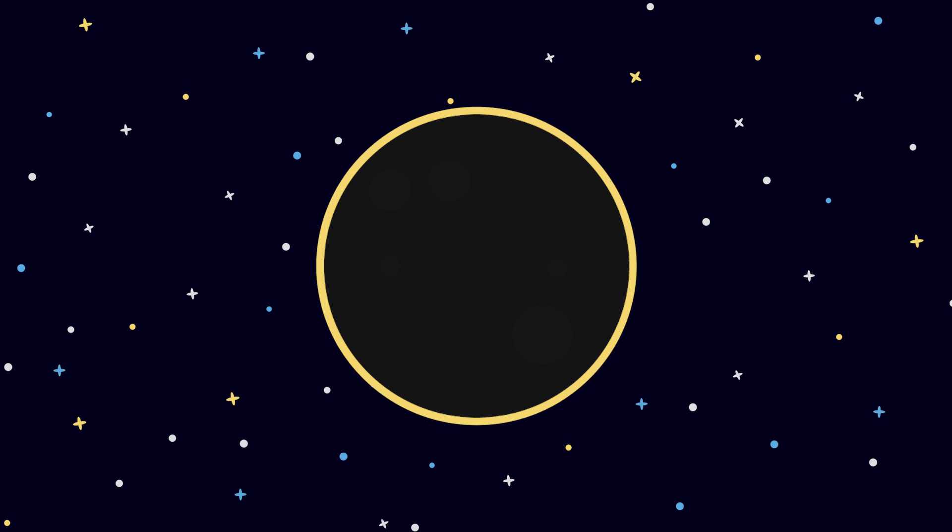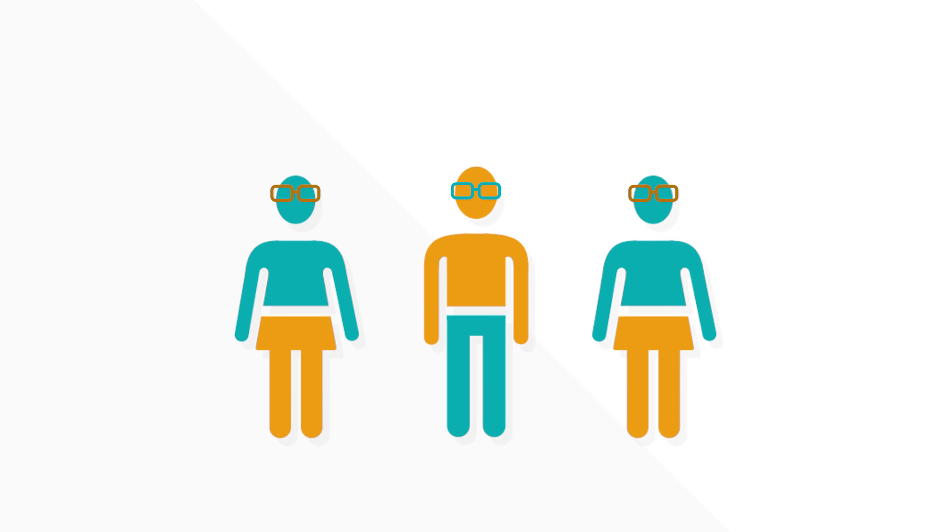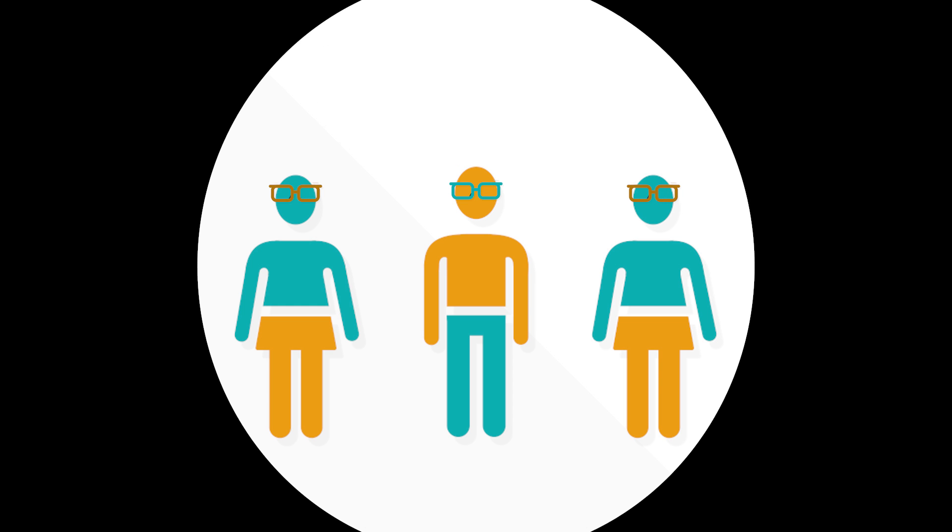The difference between a partial and total eclipse is dramatic, but require the same safety precautions. Most importantly, do not look directly at the sun. The only safe way to look at an eclipse is through a pinhole projector or with eclipse glasses. Looking at the sun without these tools can result in temporary or permanent blindness.